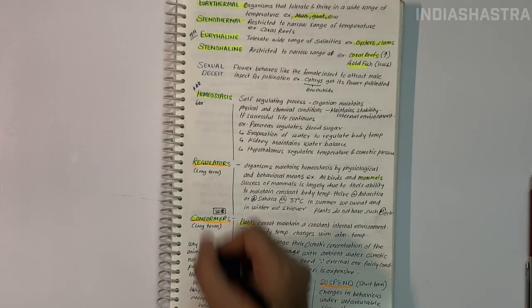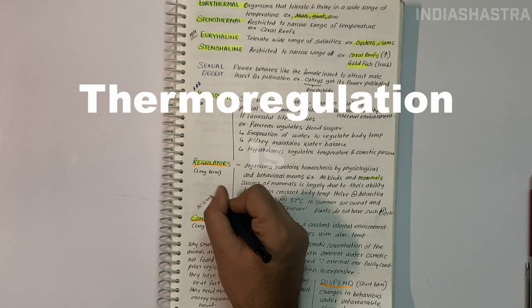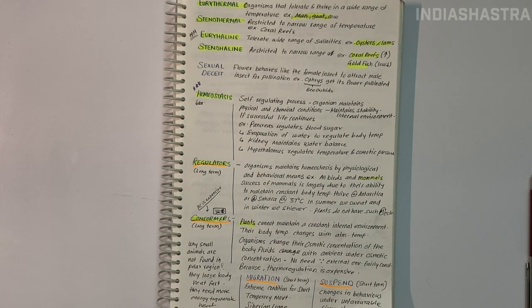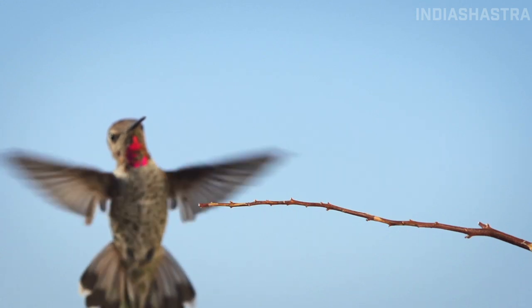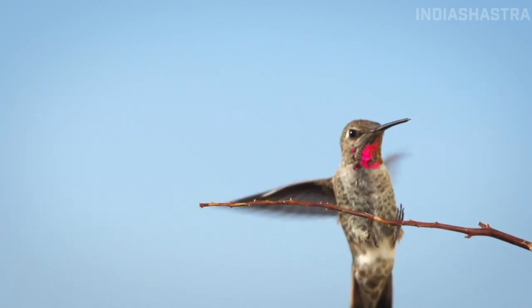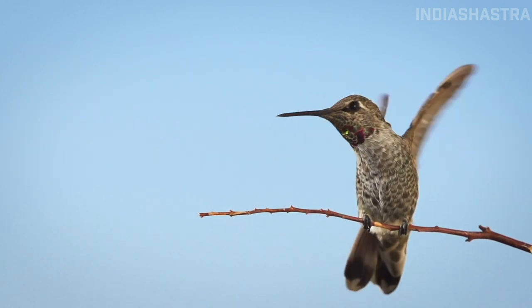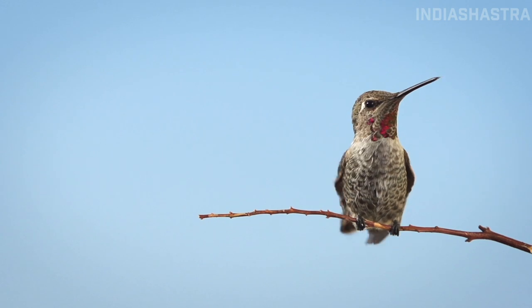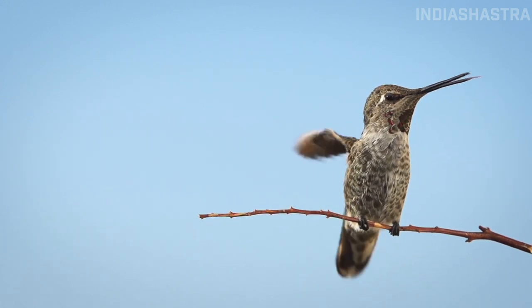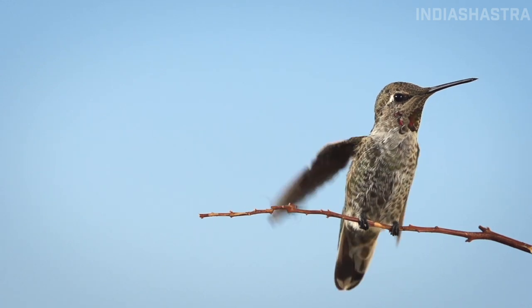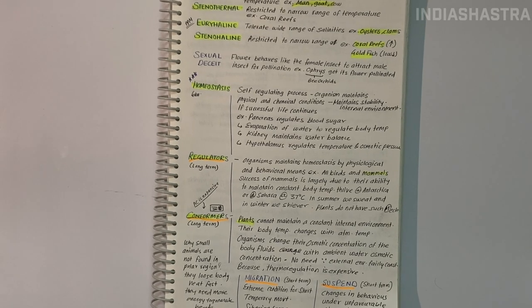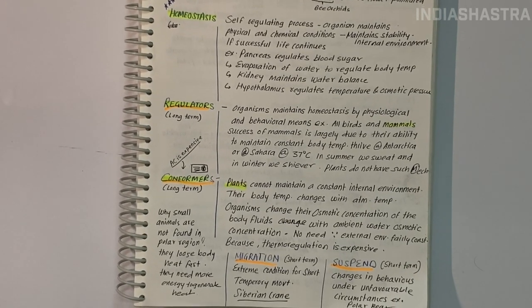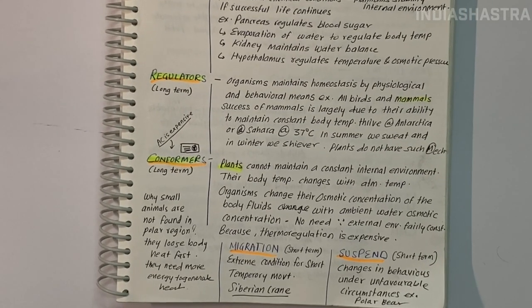Conformers: 99% of animals and nearly all plants cannot maintain constant internal environment and haven't evolved to become regulators. I cannot afford an air conditioner, so I simply conform to surrounding temperature. But we are regulators - our internal AC maintains temperature. Thermoregulation is energetically expensive for many organisms.